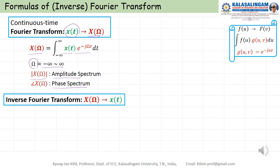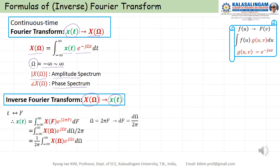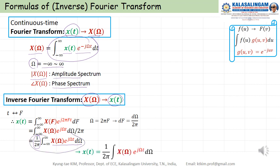Inverse transform means we know X of Omega, and from this, how do we find the waveform X of T? This is X of T equal to 1 over 2 pi, integral from minus infinity to infinity of X of Omega. Now you can compare these two equations. You can find that 1 over 2 pi is added, and instead of X of T you use X of Omega, and also the exponential uses plus J Omega T instead of minus J Omega T. From this we can get X of T. We call this the inverse transform.